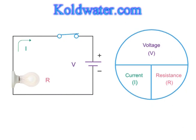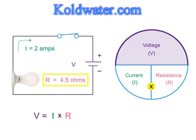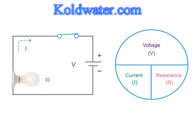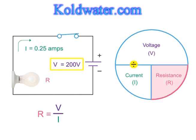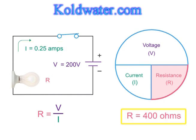Using the Ohm's law circle, if you know the values of any two variables, you can solve for the third. If you have a current of 2 amps and a light bulb with a resistance of 4.5 ohms, the voltage would be 2 times 4.5 or 9 volts. If you know the voltage in a circuit is 200 volts and the amps is 0.25, then 200 volts divided by 0.25 is 400 ohms.